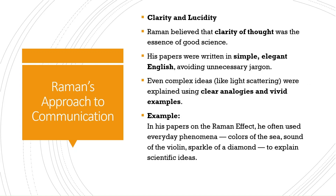There are four chapters. The first is Raman's approach to communication. He believed that clarity of thought was important for good science. He used simple words rather than technical terms for common people, and even used everyday phenomena for teaching his ideas — the color of the sea, the sound of the violin, the sparkle of the diamond.